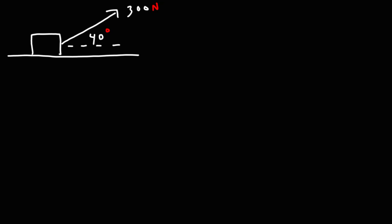In this video, we're going to talk about how to calculate the work done by a force using the dot product formula. If we want to calculate the work done by this force — this is likely a rope pulling a block — we could use this formula: it's equal to the magnitude of the force times the magnitude of the object's displacement times cosine theta.